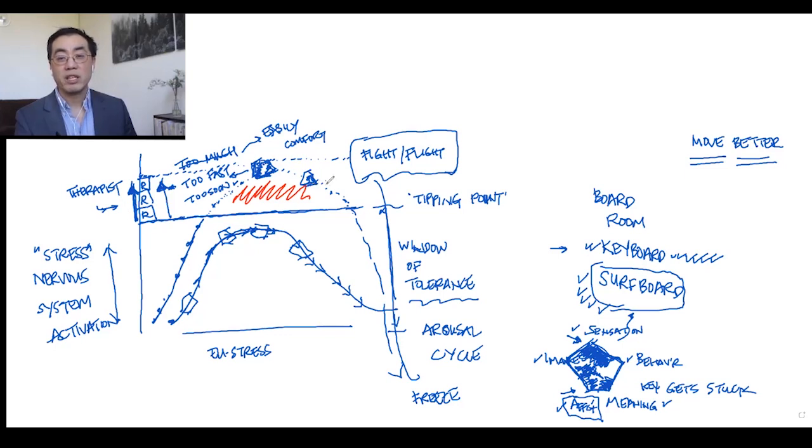Back into reconnection with the body and integrate again and slowly allow those fragmented parts to come back down the arousal cycle back into the window of tolerance where you want them to land.